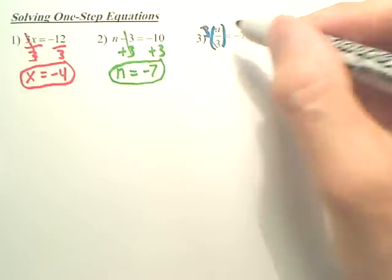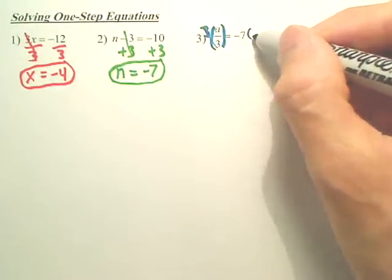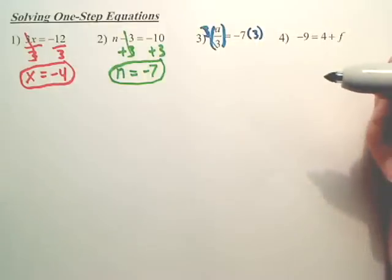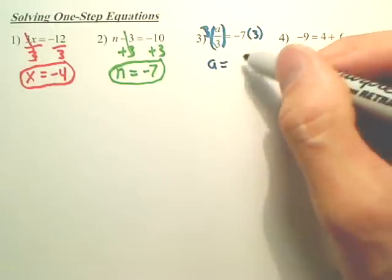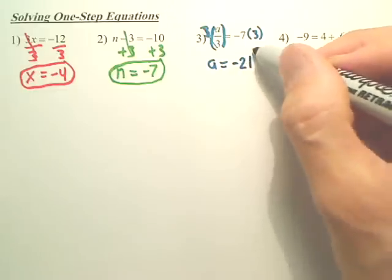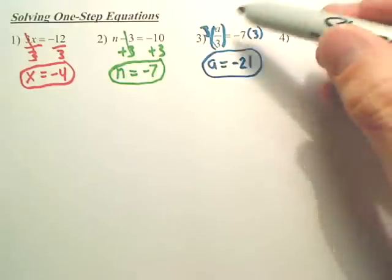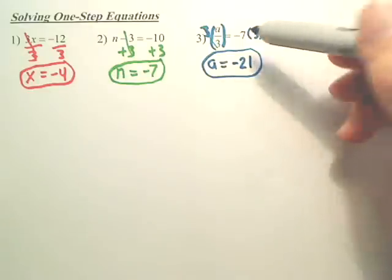That's a 3. Multiply by 3. Those cancel. But I've got to multiply this by 3. So that cancels, leaving me a. And negative 7 times 3 is negative 21. And negative 21 divided by 3 is negative 7.